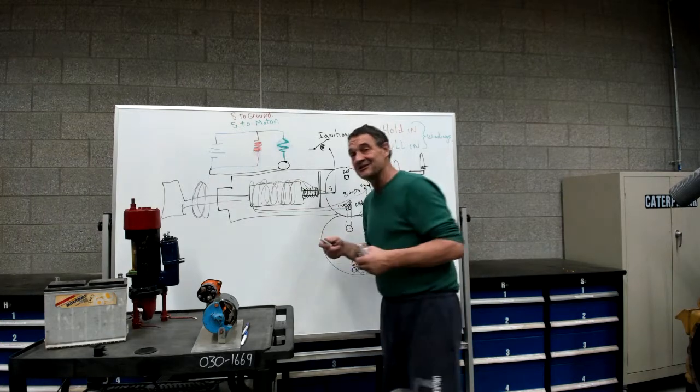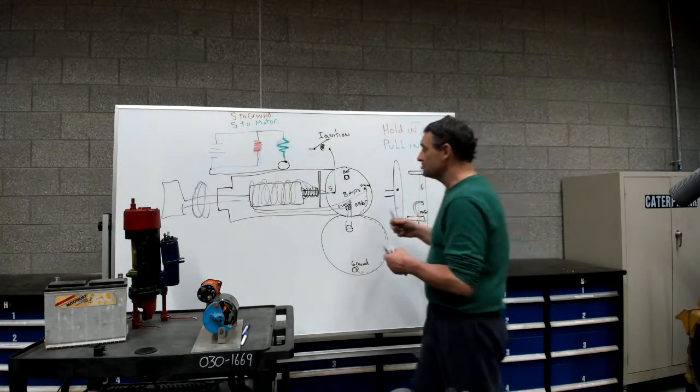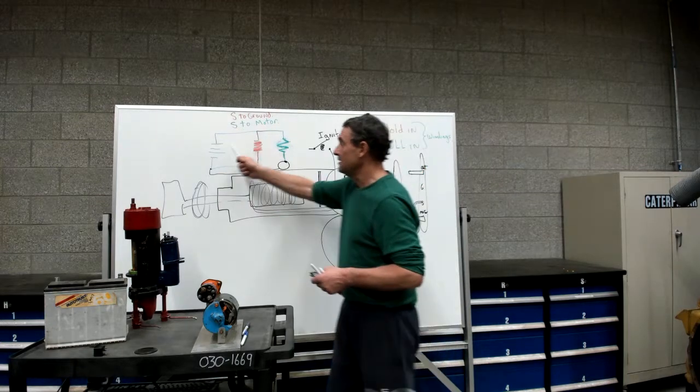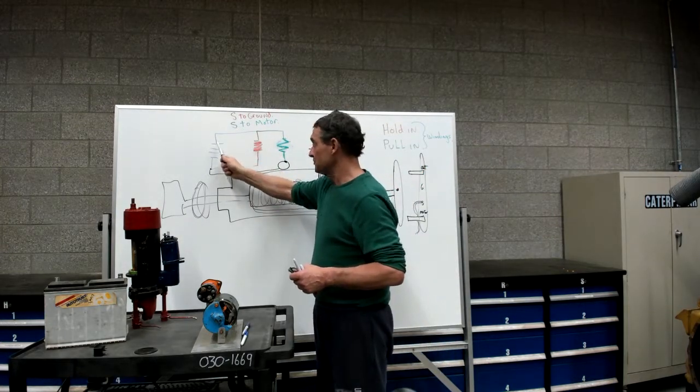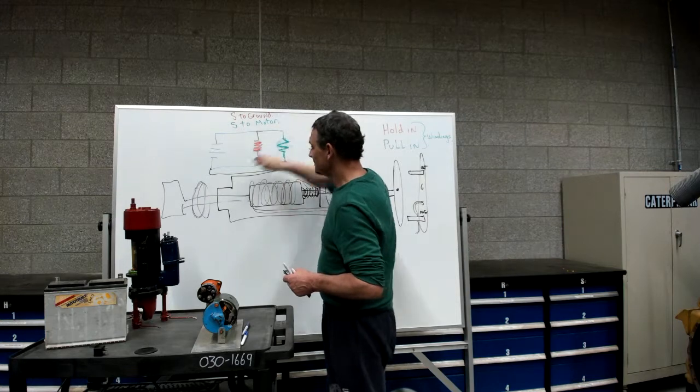So you kind of got to do it both ways. The most reliable method is to put amperage to these circuits. Just remember, you're going to put amperage from your battery to the S terminal and then to the ground.